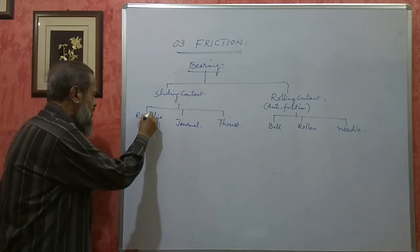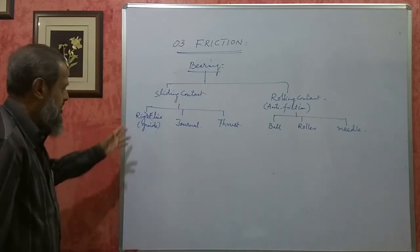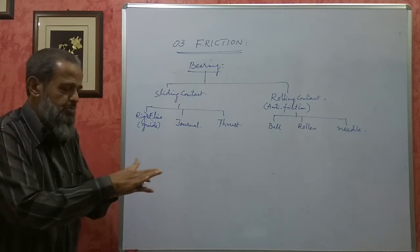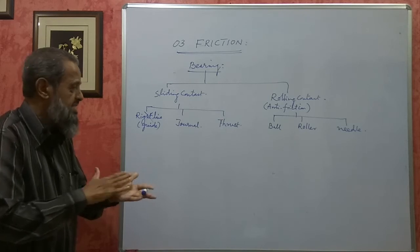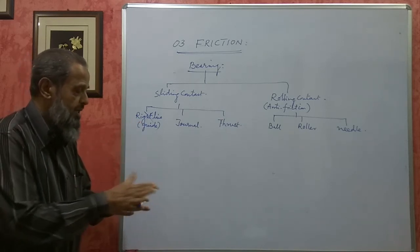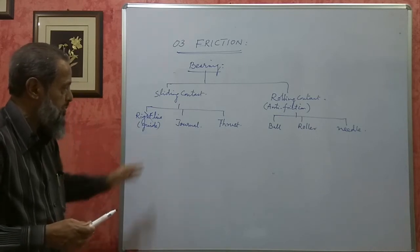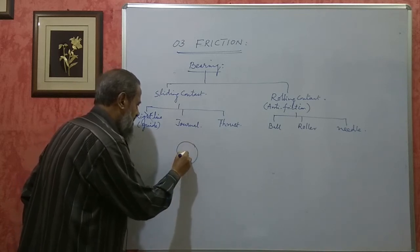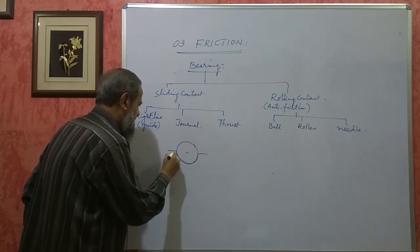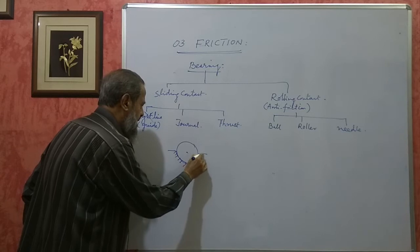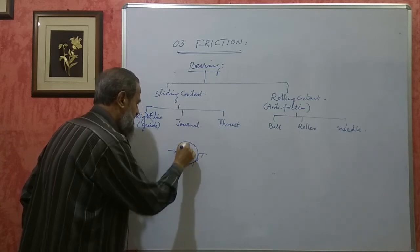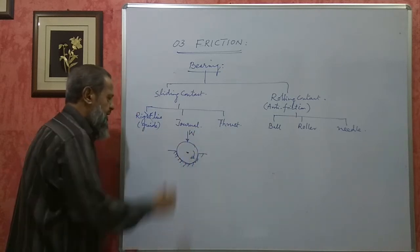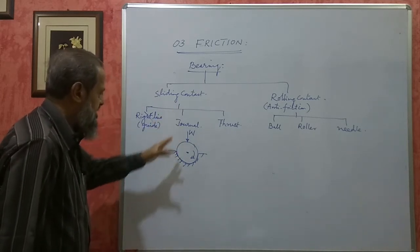Right-line or guide bearings have no mathematical treatment — just theory. For example, the ram of a shaper moves over a guiding surface; that surface is a right-line or guide bearing, where relative motion takes place parallel to the support. In a journal bearing, the shaft rotates and the load acts perpendicular to the axis of the shaft. When the load on the bearing is perpendicular to the axis of the moving element, it is called a journal bearing.